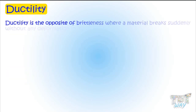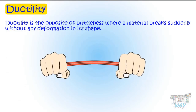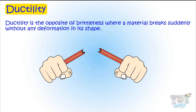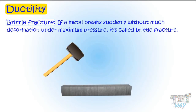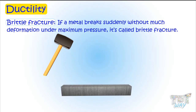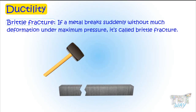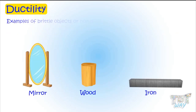Ductility is the opposite of brittleness, where a metal breaks suddenly without any deformation in its shape. When a metal or any matter is put under maximum pressure and it breaks suddenly without much deformation or change in shape of the matter, it's called brittle fracture. Such matter or metal is not at all ductile, and such metal is called a brittle metal.